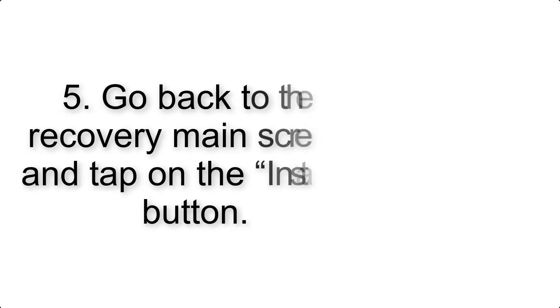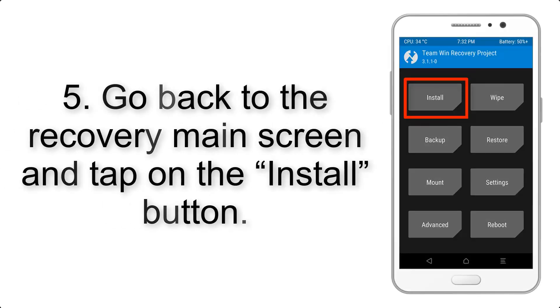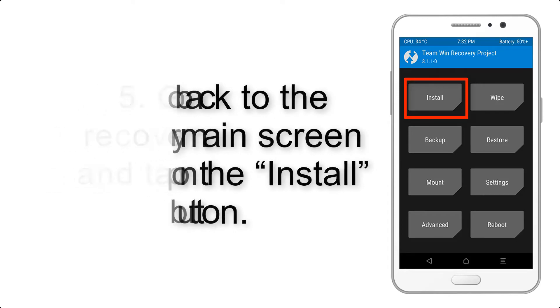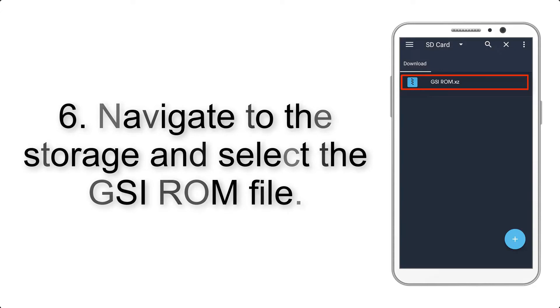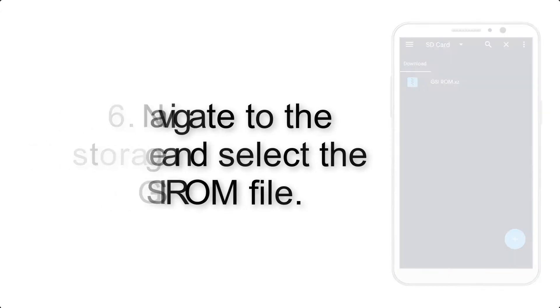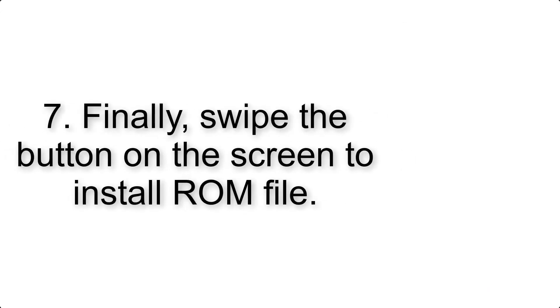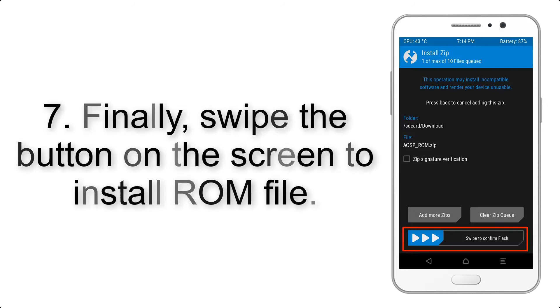Step 5: Go back to the recovery main screen and tap on the Install button. Step 6: Navigate to the storage and select the GSI ROM file. Step 7: Finally, swipe the button on the screen to install the ROM file.